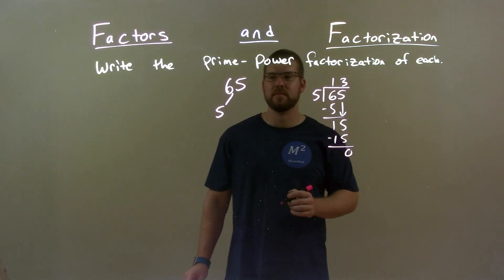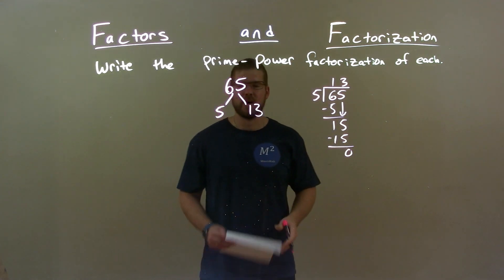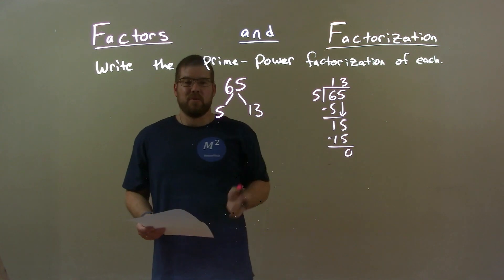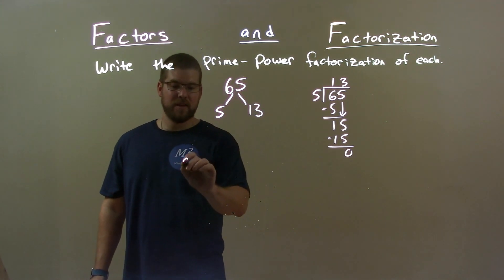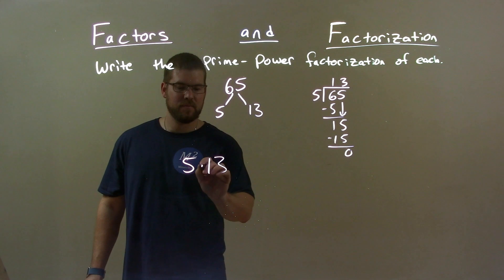So 13 times 5 gives us 65. Well, these are both prime numbers, so we're done. Our final answer is just 5 times 13.